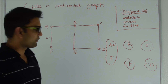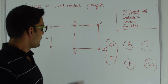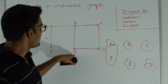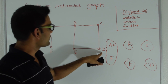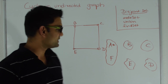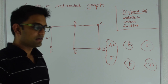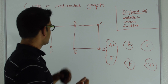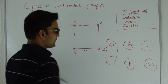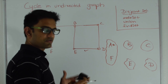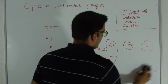Now let's pick another edge — say E-D. We do a find set on E, which returns E, and a find set on D, which returns D. Again they are in different sets, so adding this edge is not going to create a cycle. So let's do a union of these two sets.